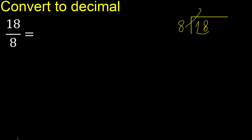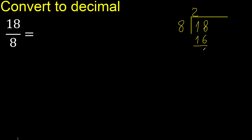But not greater. 8 multiplied by 3 is 24 — 24 is greater. 8 multiplied by 2 is 16. Ok, 16 is not greater. 18 minus 16 is 2.